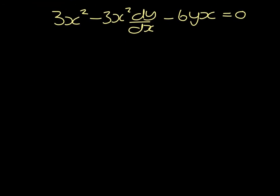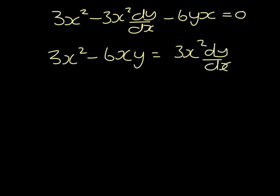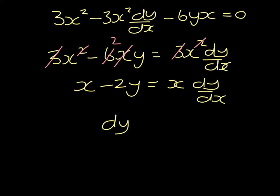Now we need to manipulate this. 3x squared minus 6xy will equal 3x squared dy dx. There's an x in every term, so those will cancel. There is a 3 in every term, so those will cancel. Which leaves us with x minus 2y equals x dy dx. So dy dx is x minus 2y all over x.